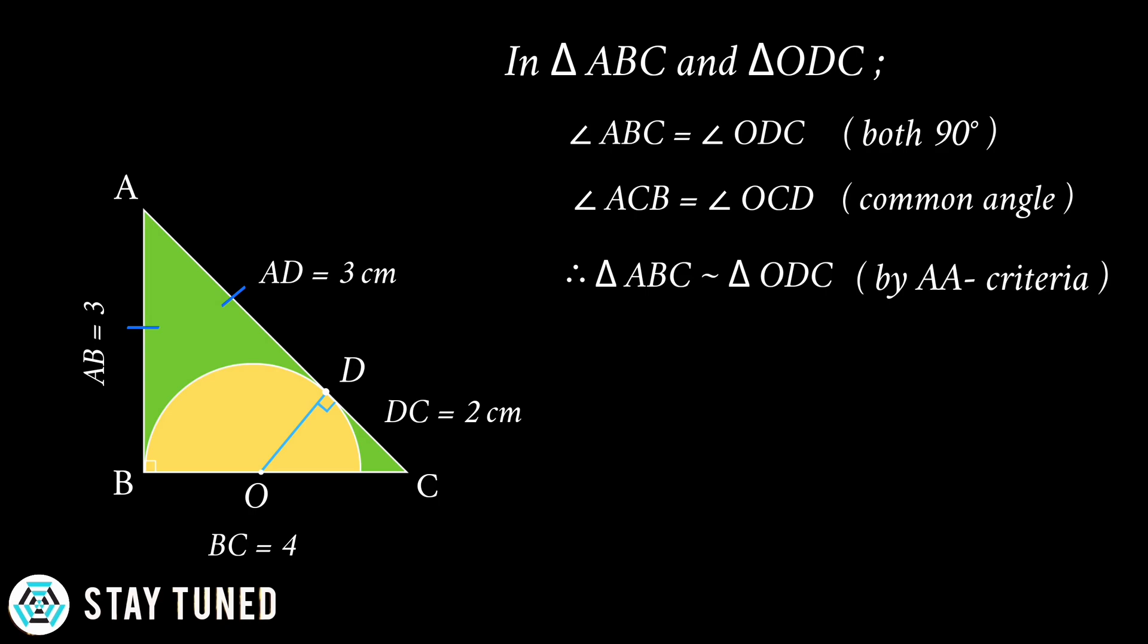Since triangle ABC is now similar to triangle ODC, the ratio of their corresponding sides will be equal. That is, AB upon OD is equal to BC upon DC is equal to AC upon OC.